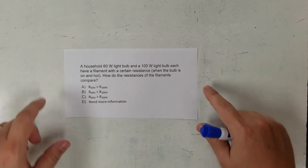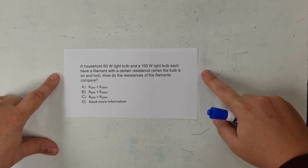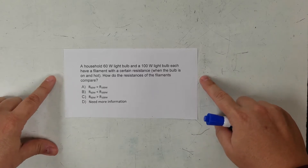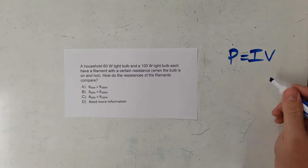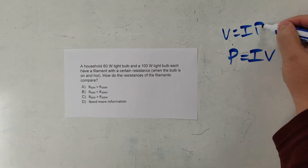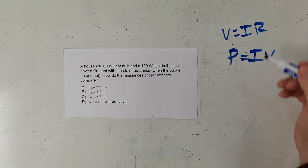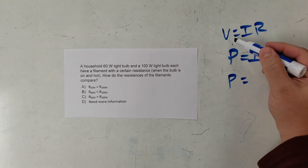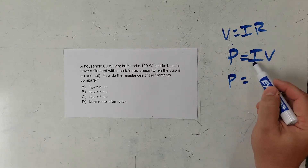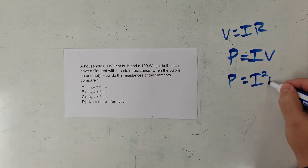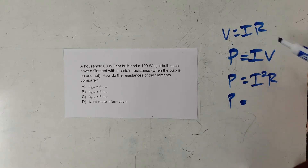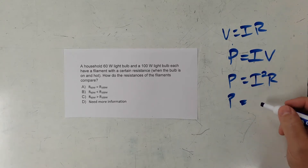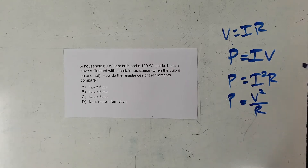There are three problems. To do all of these, I need my power equations. The basic one is power equals current times voltage. If you take Ohm's Law, V = IR, and substitute that in for different things, you get two more formulas. Substituting IR in for V gives I times IR, which is I²R. For the third equation, solving for I gives V over R, so plugging that in gives V²/R. So we have three equations relating power to voltage, current, and resistance.